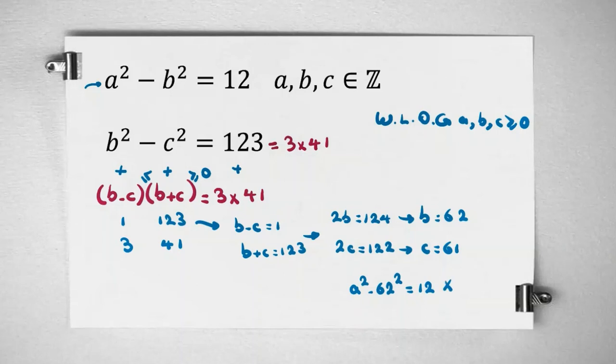Because a squared minus 62 squared is positive, it's not possible. Because for a equals 63, 63 squared minus 62 squared equals 63 minus 62 times 63 plus 62, which is 125, which is greater than 12. If you increase a, it will be increased. So first case was not possible.